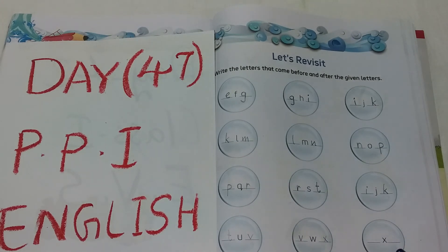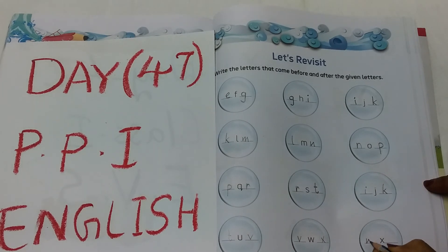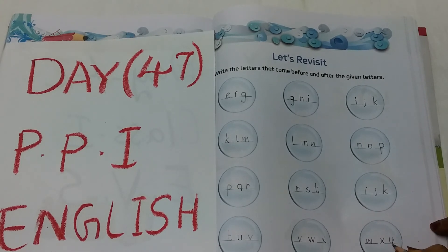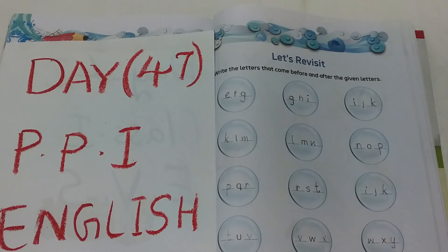Now see the last circle, children. Letter X. X before W. W, X, Y.